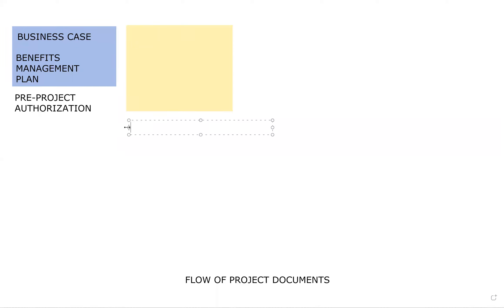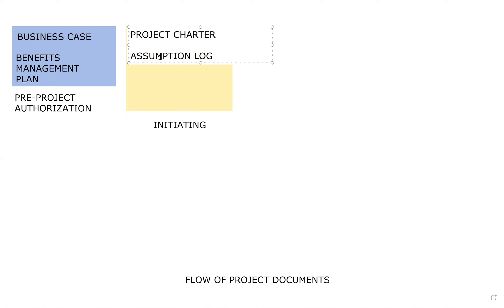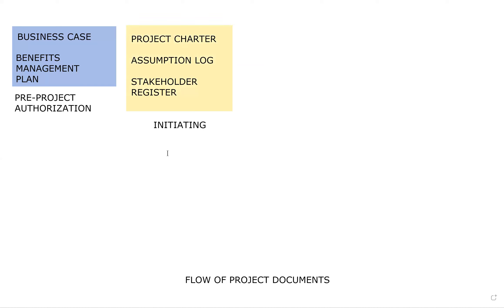Once the authorization has taken place, there are things that you get from initiating the project. From initiating, you get a project charter and also an assumption log — a log of assumptions and constraints. The other thing you get from initiating is the stakeholder register, which catalogs your stakeholders, the major things they are seeking, their level of power, influence, interest, and things like that.